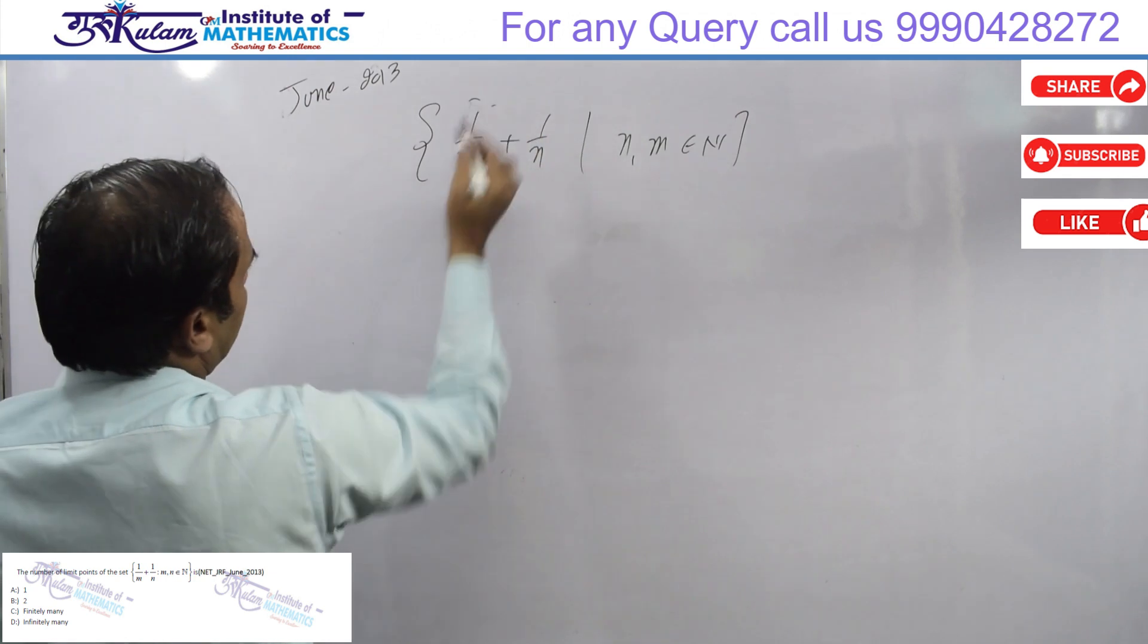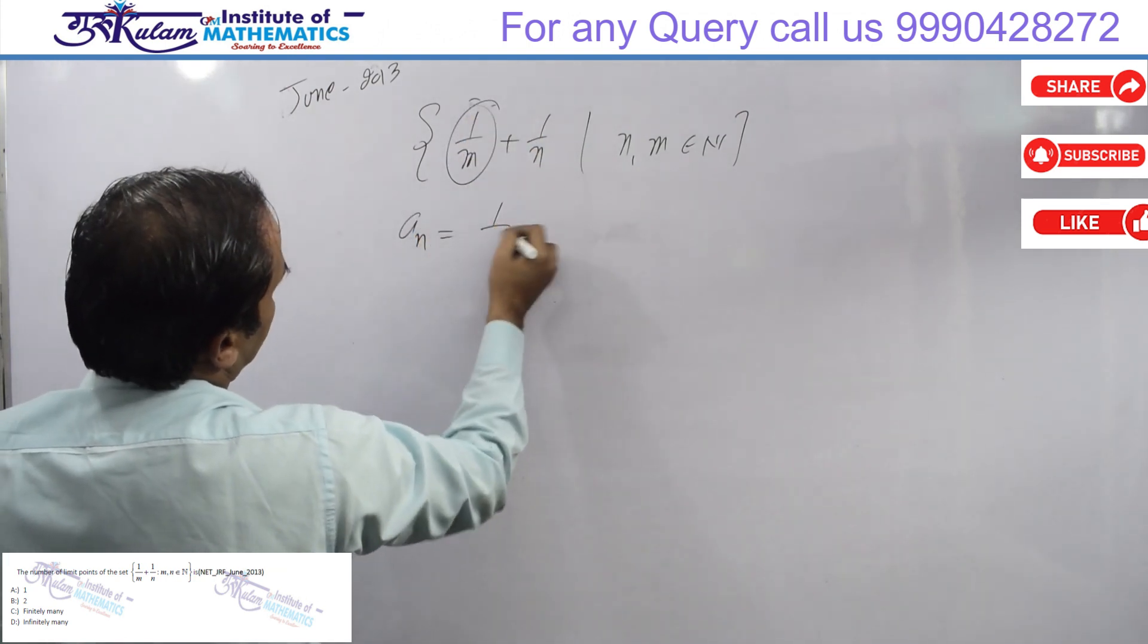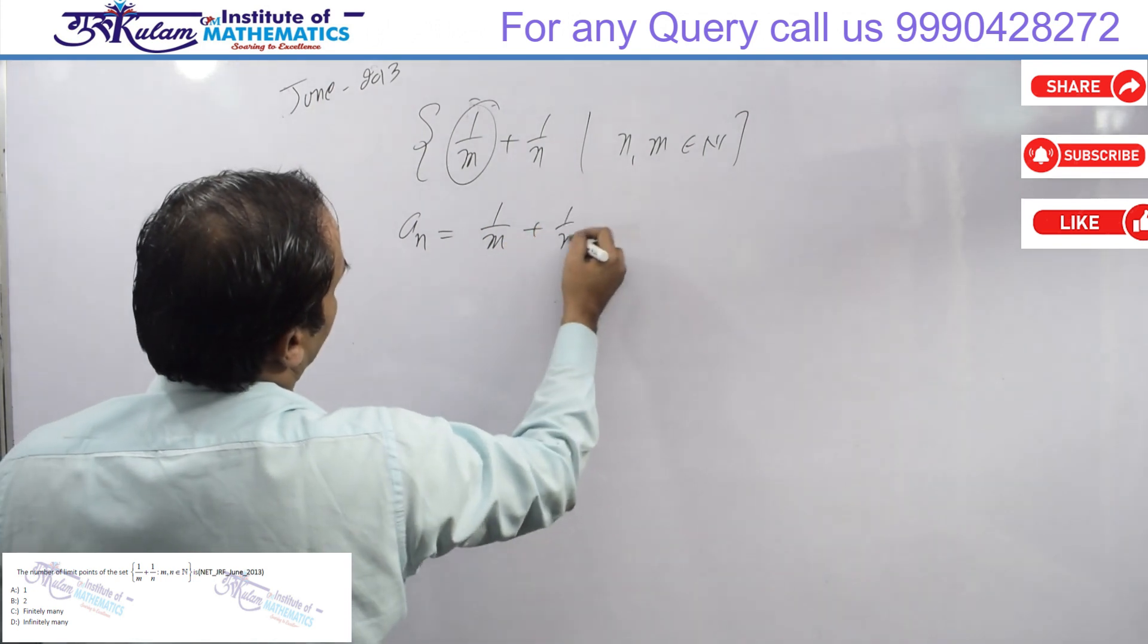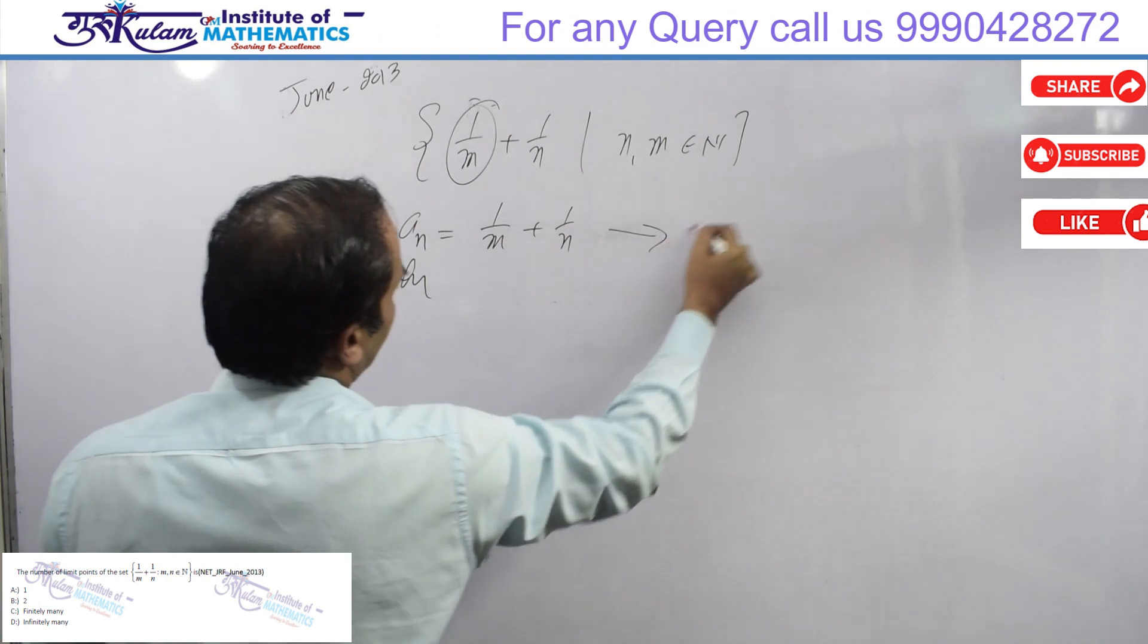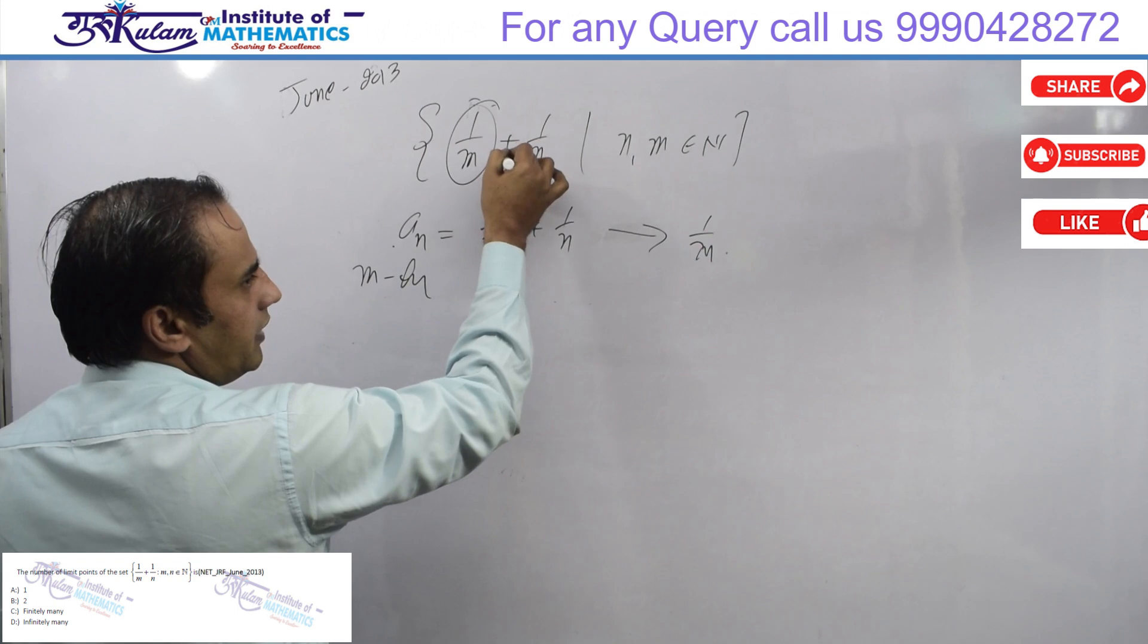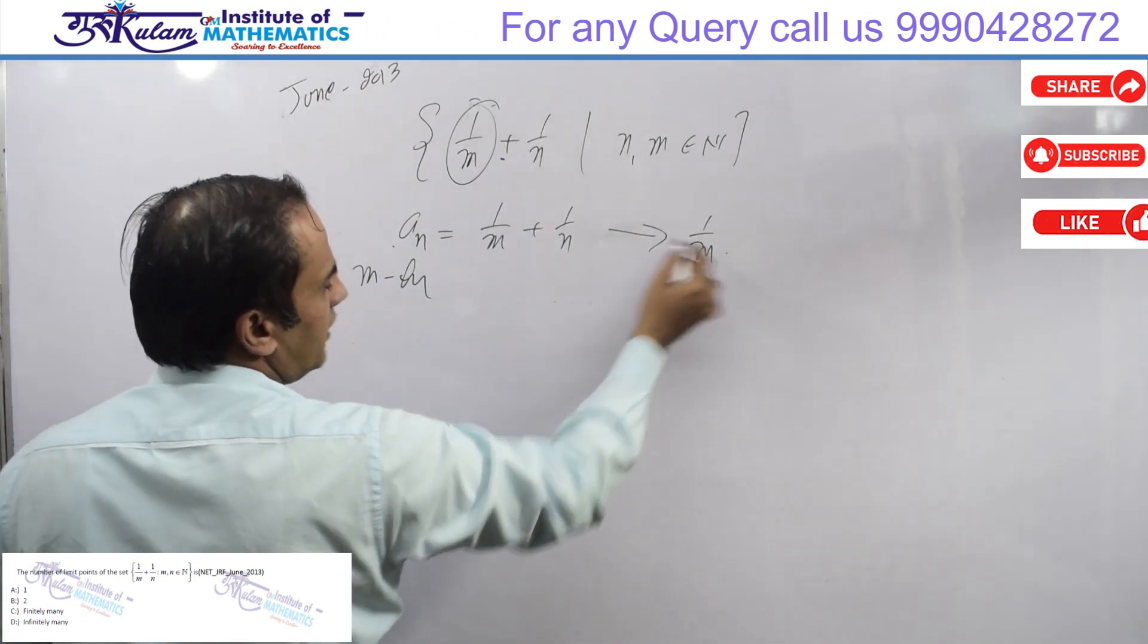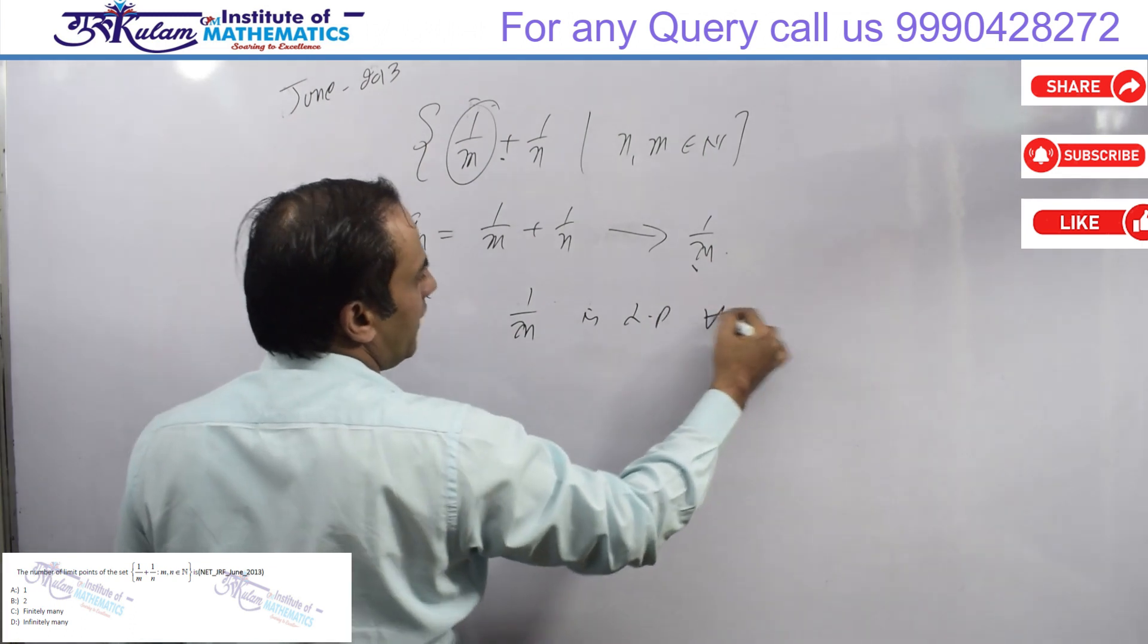When we have 1/m fixed, then the n sequence which is 1/m + 1/n, here m is fixed, then n tends to infinity. 1/m tends to... this sequence converges, so it means that 1/m is a limit point for every m.